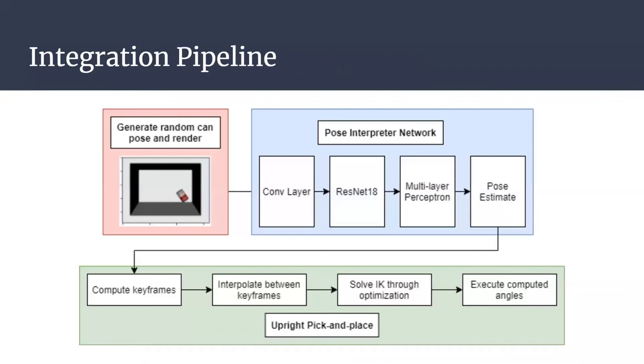To integrate the perception and upright pick and place subsystems, I created this pipeline. The can is initialized and rendered in a random pose in the bin. This image is then fed into one of our pose estimators, which computes its pose. Finally, its pose is fed into the pick and place system, which attempts to pick up and place the can upright using this estimated pose to compute the grasp pose.